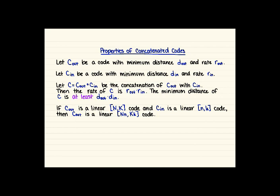Then when we're looking at the concatenated code, we use this notation Cout circle Cin to be the concatenation of these two codes. Something to notice here is that the order that this is written in is maybe a little bit strange when you compare this to function notation.